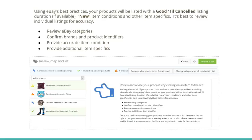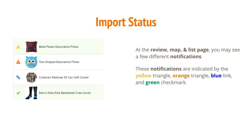Review eBay categories, confirm brands and product identifiers, provide accurate item condition, and provide additional item specifics. At the Review, Map, and List page, you may see a few different notifications, indicated by the yellow triangle, orange triangle, blue link, and green checkmark.